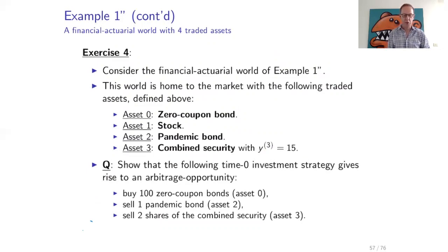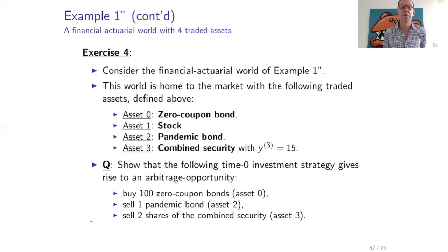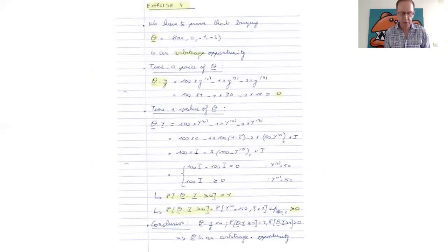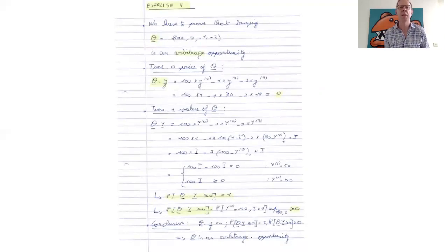The question is then: show that the following investment strategy gives rise to an arbitrage opportunity. Buy 100 zero coupon bonds, sell one pandemic bond, and sell two shares of the combined security. If you set up this portfolio, you must find an arbitrage opportunity. The trading strategy (100, 0, -1, -2) must be shown to be an arbitrage opportunity.